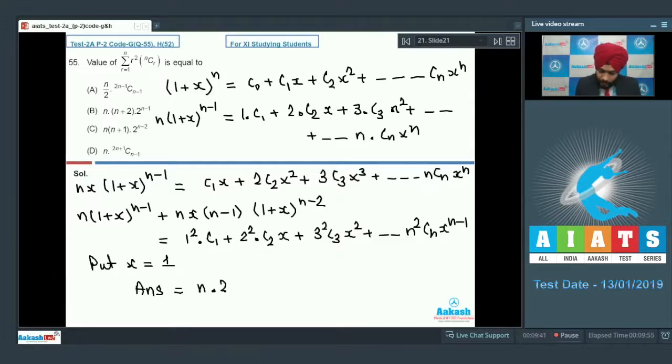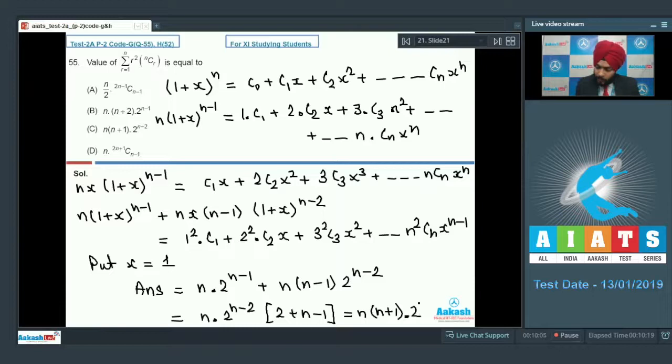Get the answer as n into 2 raised to the power n minus 1 plus n into n minus 1 into 2 raised to the power n minus 2, take this common. Here we will be having 2 plus n minus 1. Ultimately it is n into n plus 1 into 2 raised to the power n minus 2.